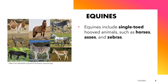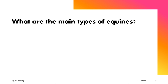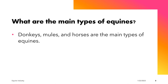Equine is also defined as a single-toed, hoofed animal, and this may include horses, asses, and zebras. The main types of equines are donkeys, mules, and of course horses.